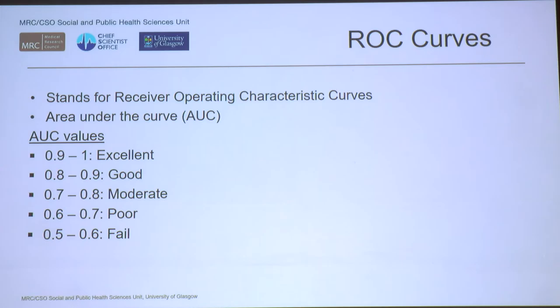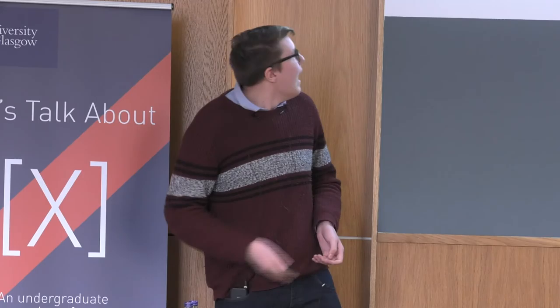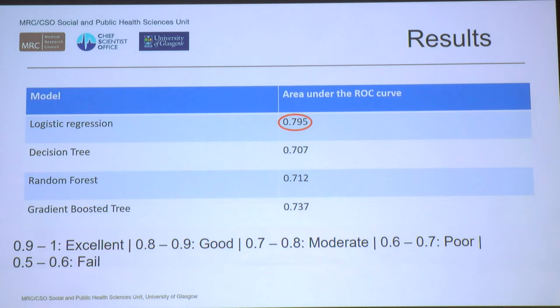We look at the area under the ROC curve — in this case 0.795 — as our measure of how well the model performed. If the area is 0.5, the model is no better than flipping a coin at identifying which children are at risk. If it's 1.0, the model has done a perfect job. The value of 0.795 represents a moderate to good model.